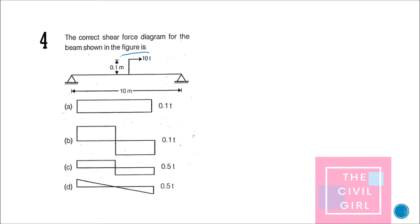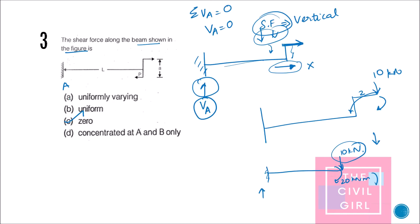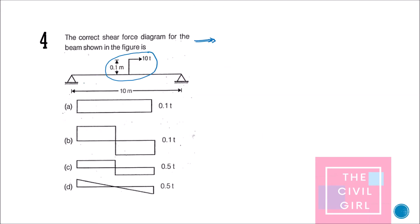Next question: the correct shear force diagram for the beam shown is what? Here we have an axial force again, but this time it is a simply supported beam rather than a cantilever. For a simply supported beam it is always good to find RA and RB. Let me redraw the beam with a moment of 1 ton·meter applied, and find RA and RB.